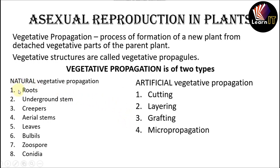Natural vegetative propagation has been divided into six parts, and artificial has been divided into three parts. Under natural vegetative propagation in favorable conditions, it includes roots, underground stems, creeping stems, aerial stems, leaves, and bulbils. Suckers, rhizomes, bulbs, tubers, runners, and offsets are some subcategories of natural vegetative propagation.